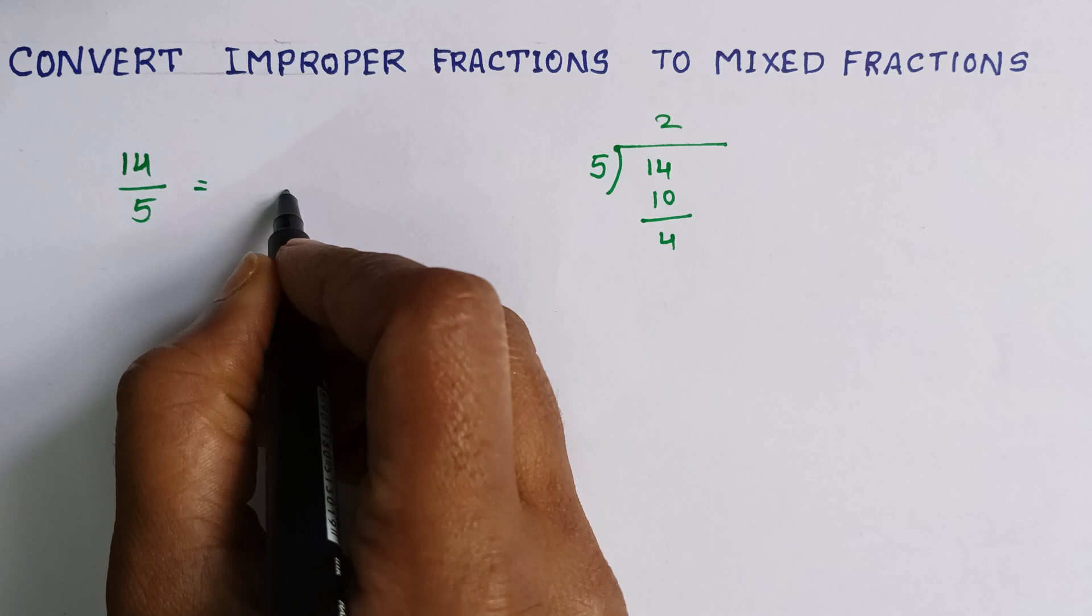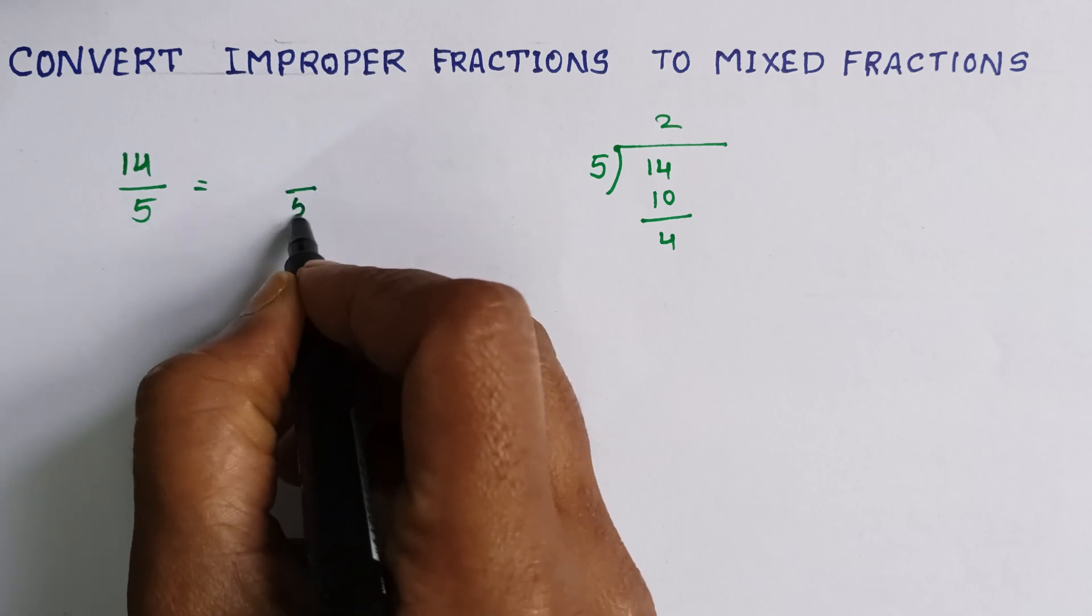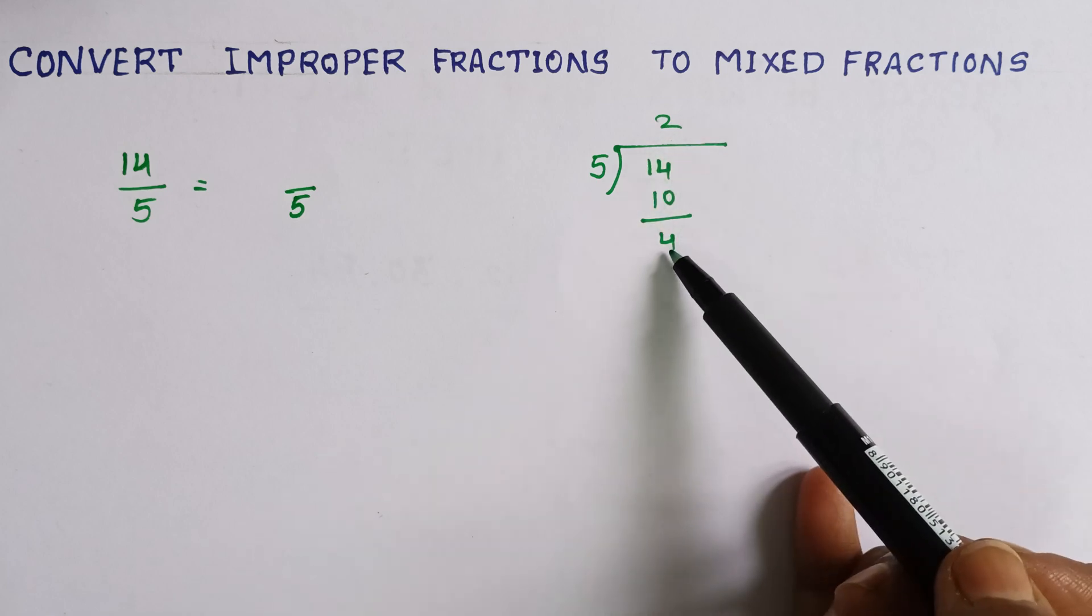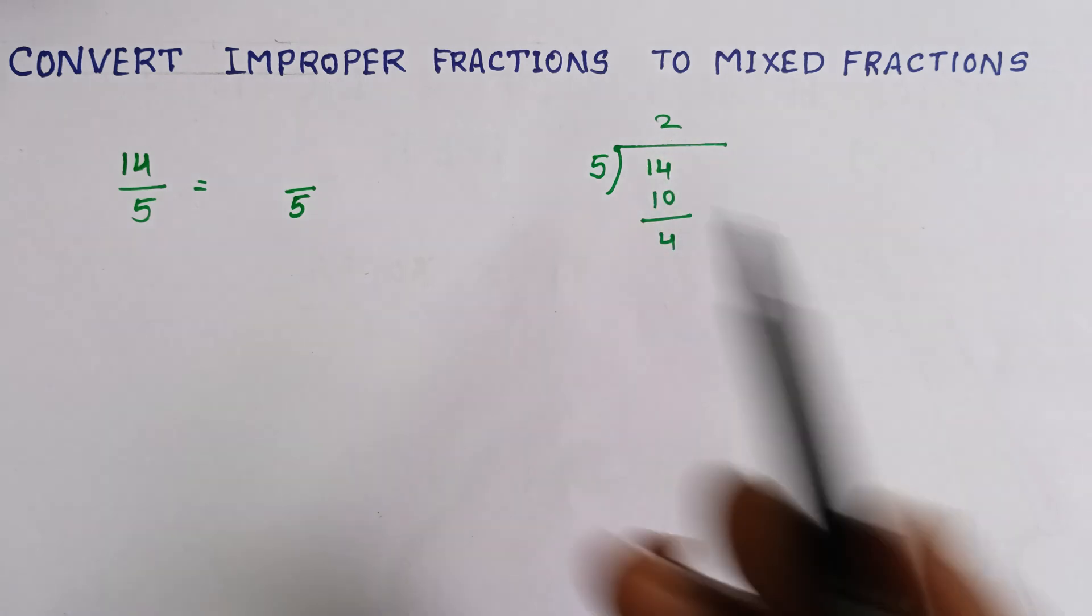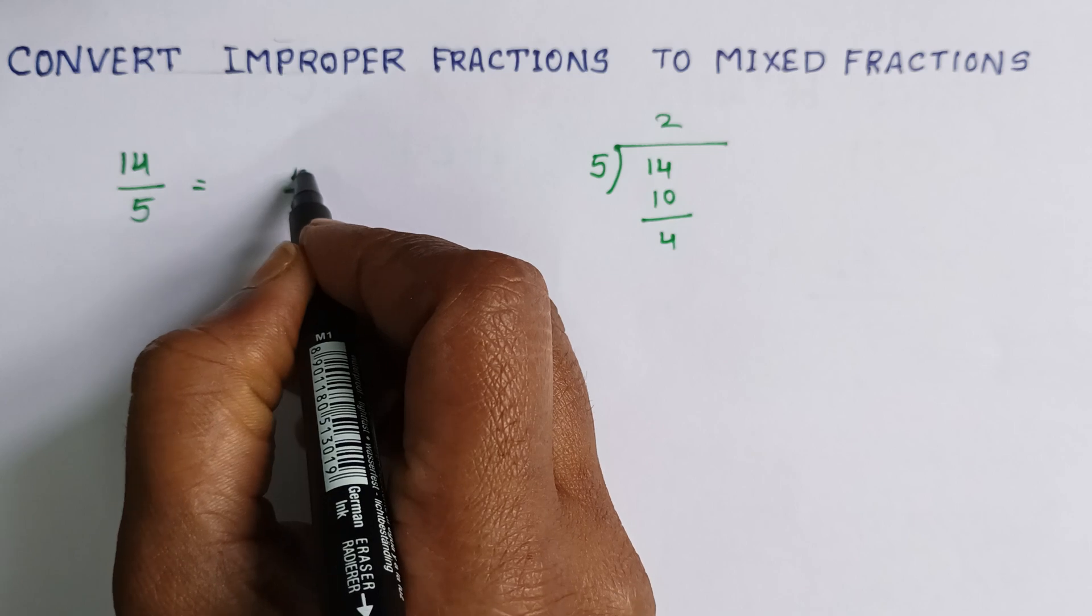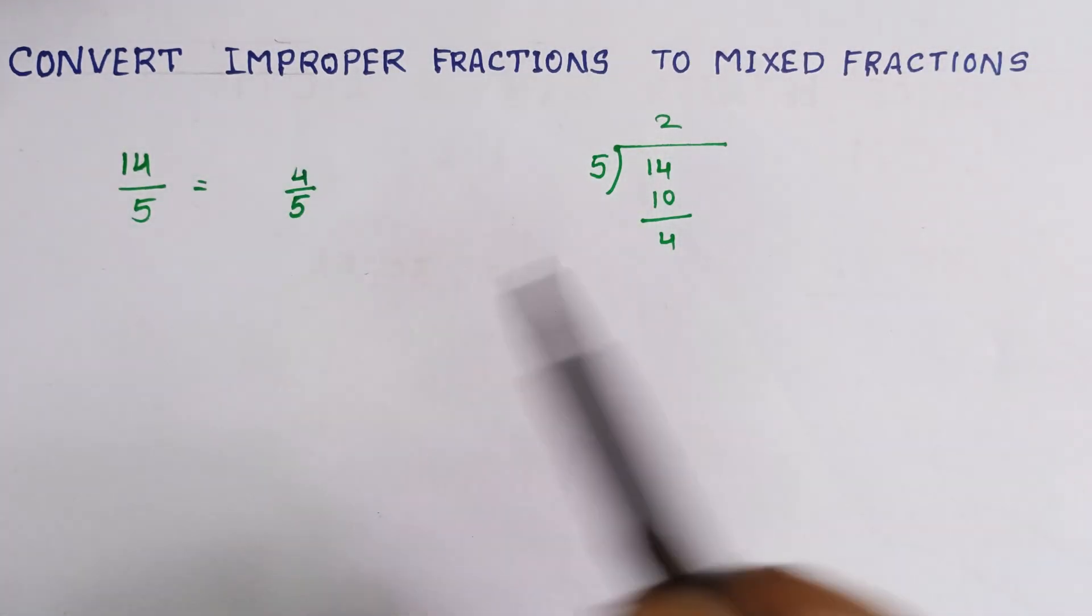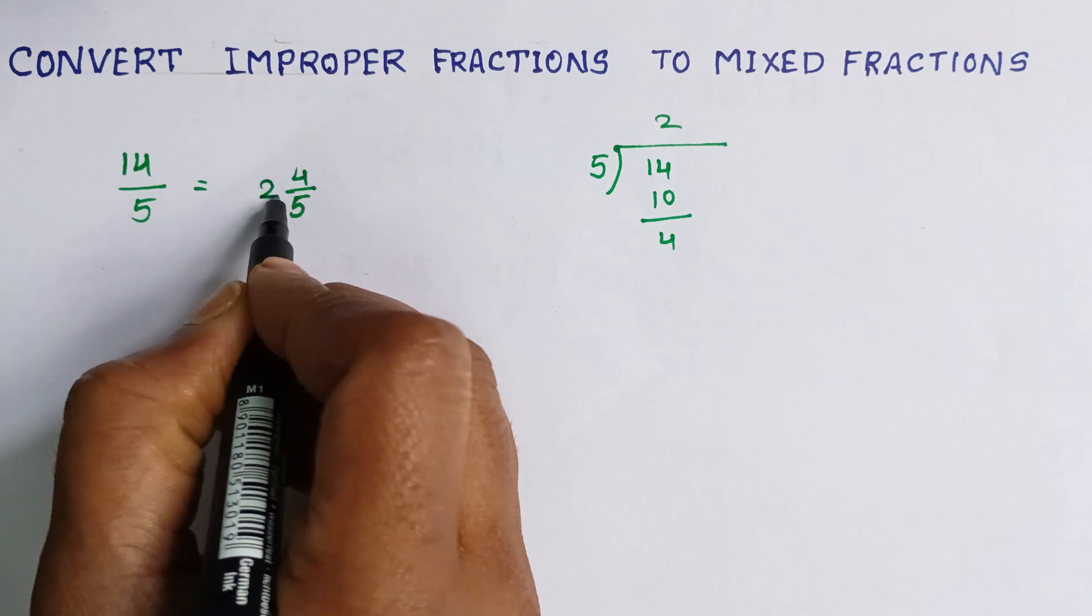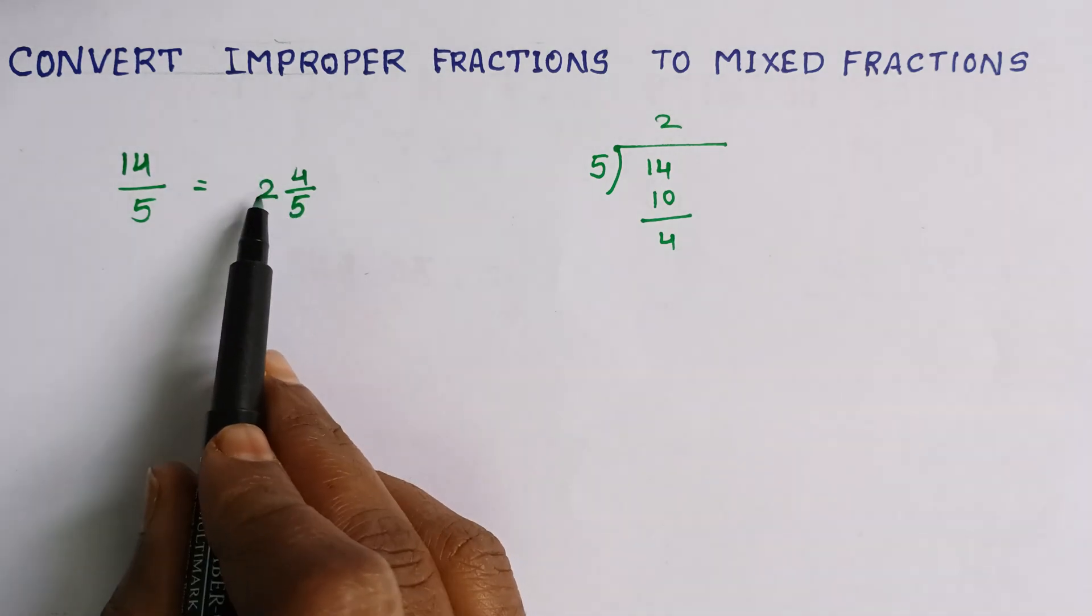The denominator is always in the denominator. The remainder is 4. This remainder will be in the numerator place, and the quotient is 2. So 2 times 5 is 10.